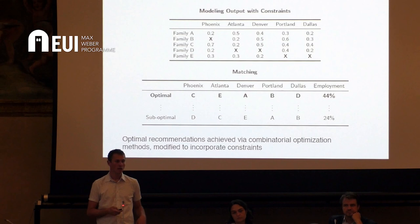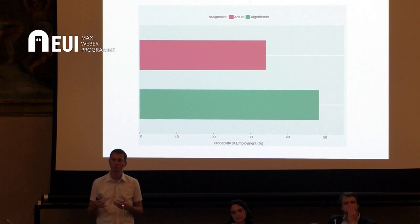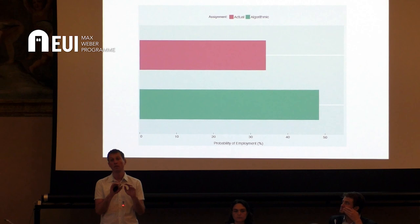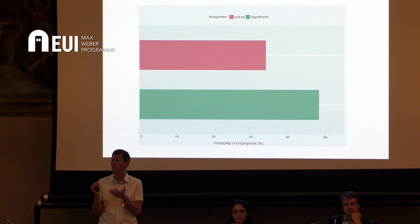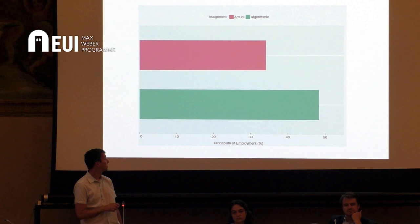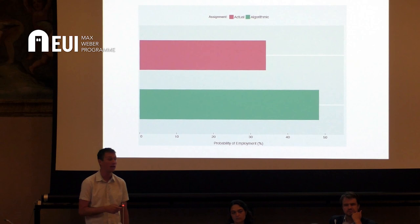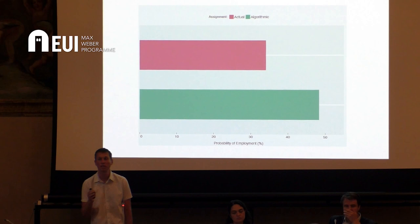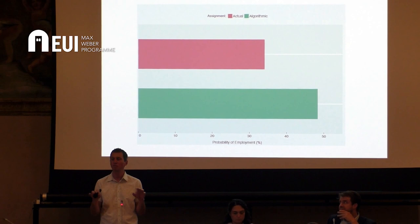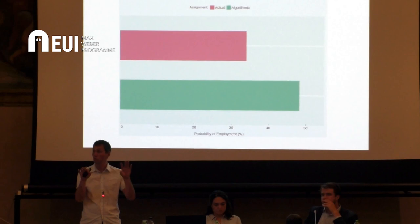Does this actually work? One thing we can do is run back tests on historical data. We take a test cohort of refugees who came in recently, observe their employment in the locations where they were actually sent, set them aside, train the algorithm on all historical data, feed in the test cohort, make predictions, run the recommendations, and see whether they would have had higher employment had they been assigned algorithmically rather than under the status quo. When you do this counterfactual exercise, you find quite significant gains: under the algorithmically assisted allocation, you get about a 48% employment rate, while under the actual allocation the same test cohort only had about 32% finding work — a quite significant improvement without doing anything different. You're sending the same number of refugees to the same number of places, just doing better matching to leverage these synergies.